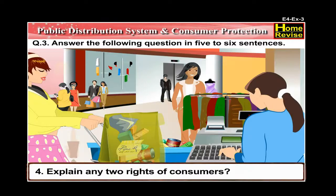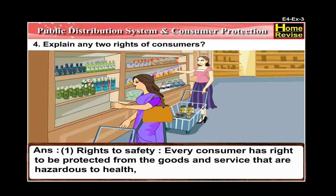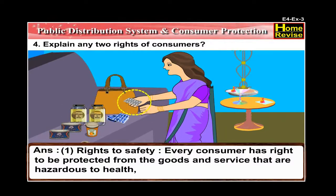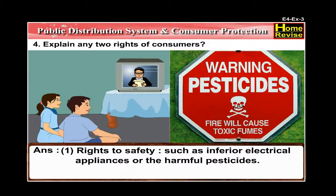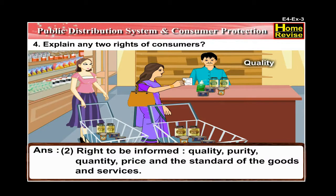Number 4: Explain any two rights of consumers. The answer is — number one, Right to Safety: every consumer has the right to be protected from goods and services that are hazardous to health, such as inferior electrical appliances or harmful pesticides. Number two, Right to be Informed: every consumer has the right to have accurate information about the quality, purity, quantity, price, and standard of goods and services.